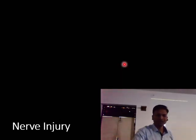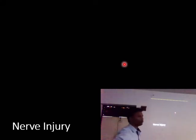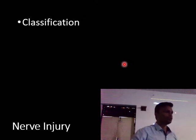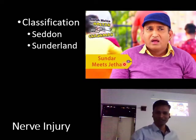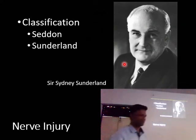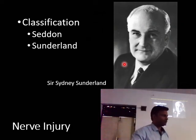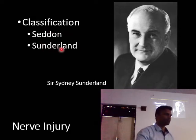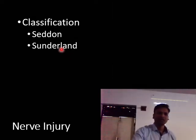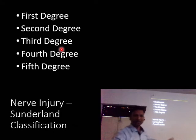Now that we understand Wallerian degeneration, we can discuss the classifications. There are two: Seddon's classification, given by Sir Herbert Seddon, and Sunderland's classification, given by Sir Sydney Sunderland. We will cover Sunderland's classification first, then Seddon's. In Sunderland's classification there are five degrees of injury — first degree through fifth degree.